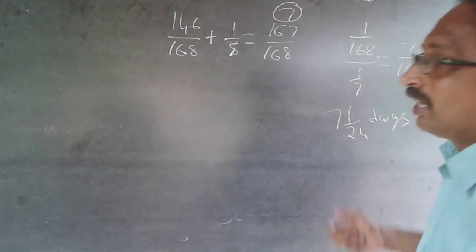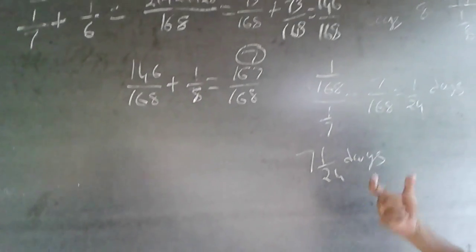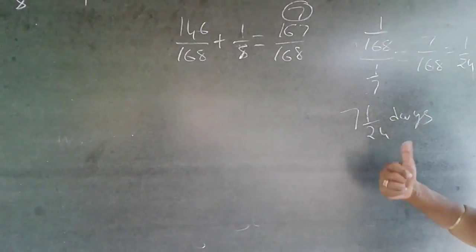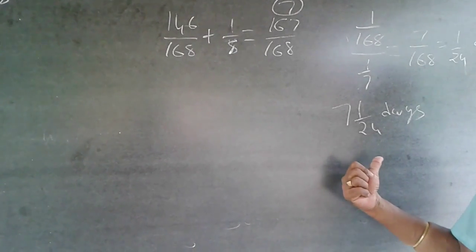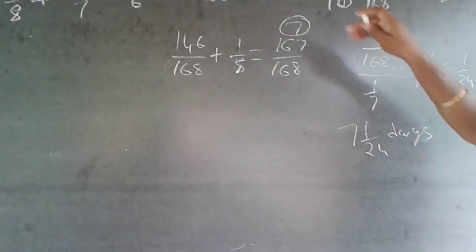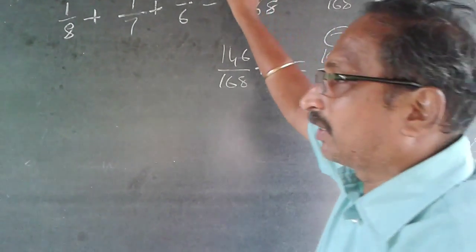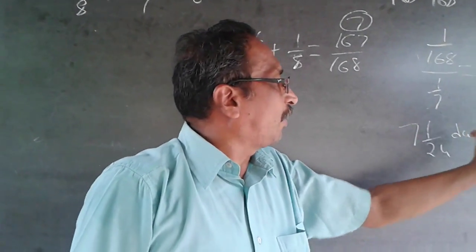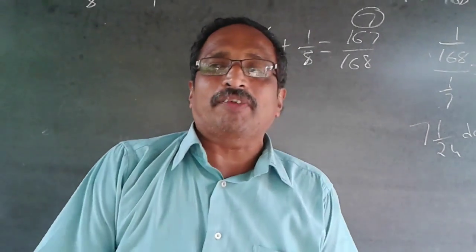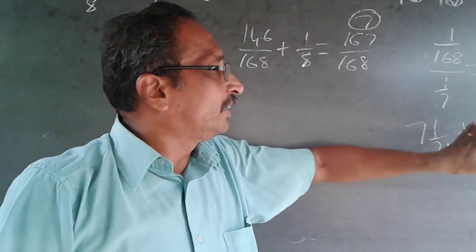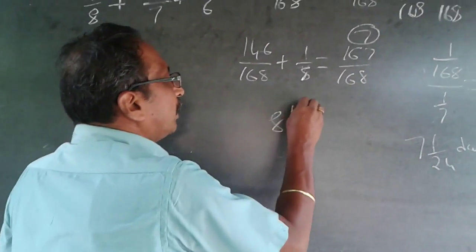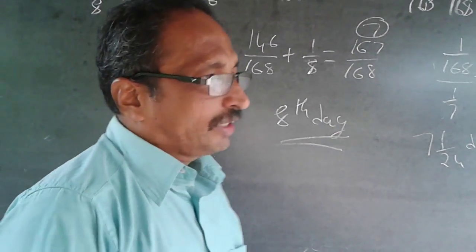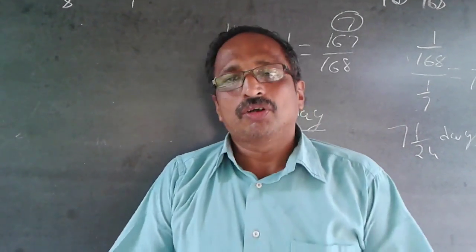The answer is 7 and 1/24 days total. But the question asks on which day they will finish the work — so even if B is working for a fraction of a second on the eighth day, the answer is the eighth day.